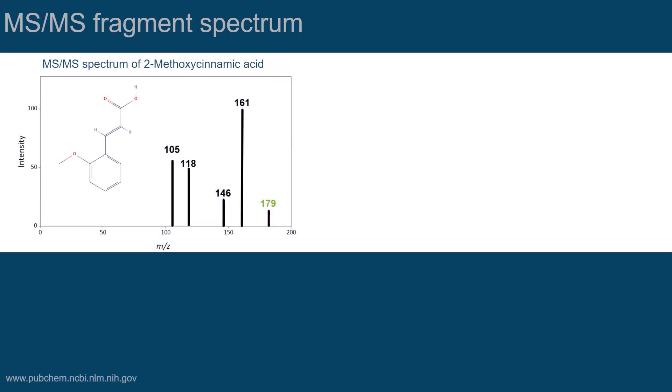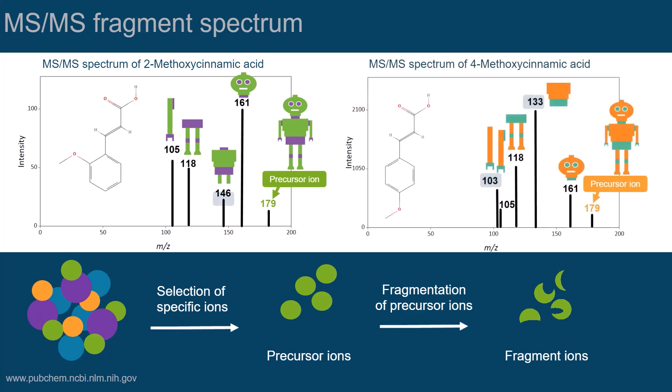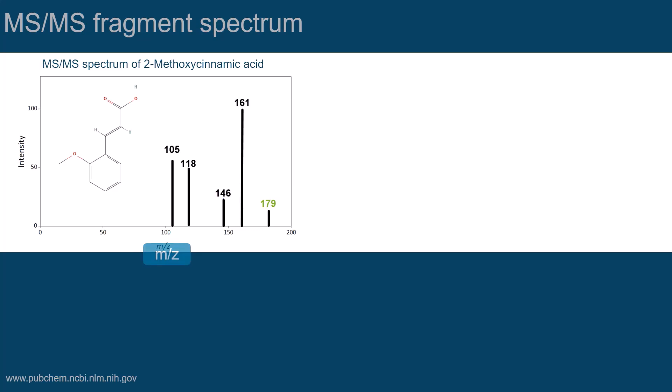The result of a CID experiment is the MS-MS spectrum. To understand this data type, it is important to know that many mass spectrometers are capable of selecting specific ions called precursor ions, fragmenting them, and detecting the resulting fragment ions. Because the fragmentation occurs at dedicated molecular bonds, the fragment spectrum can distinguish different molecules, even though they have the same precursor mass, as shown in this example. As with any mass spectrum, the m over z values of the fragment ions are shown on the x-axis, and their intensity is displayed on the y-axis.